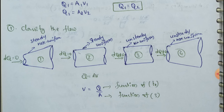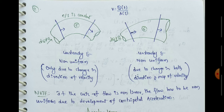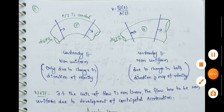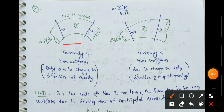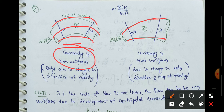Case 4: Unsteady and non-uniform — flow through a tapering pipe with either increasing or decreasing flow rate. Case 5: Also unsteady and non-uniform — same condition but with a different pipe shape (curved shape). The cross-section is the same but the flow rate changes in a non-linear manner.